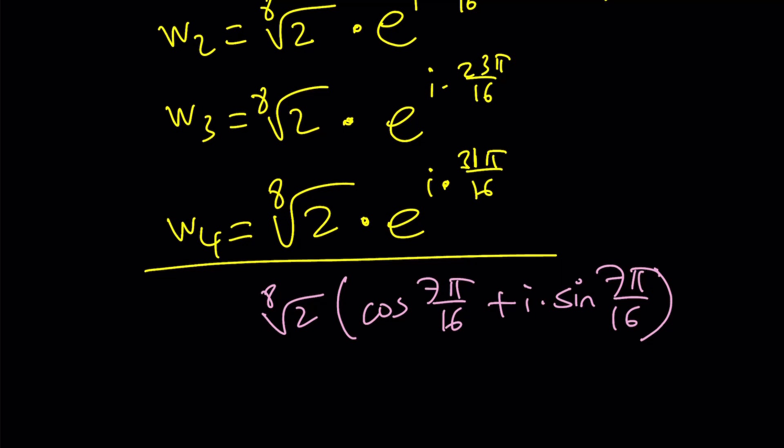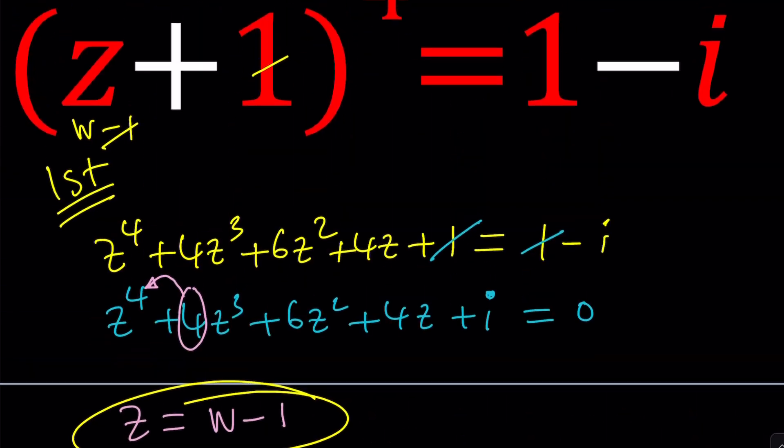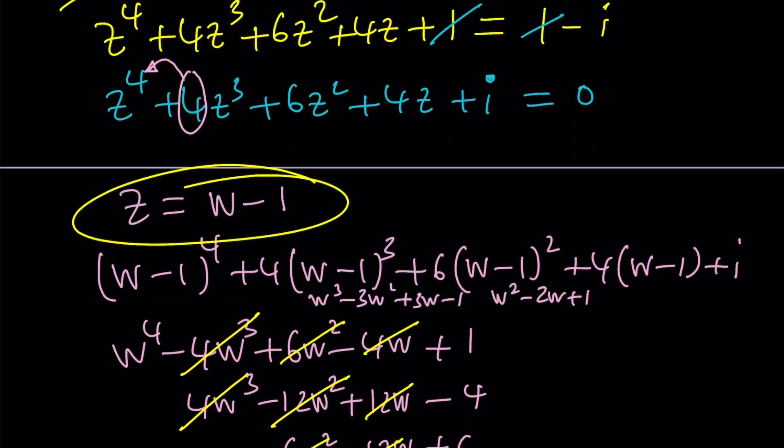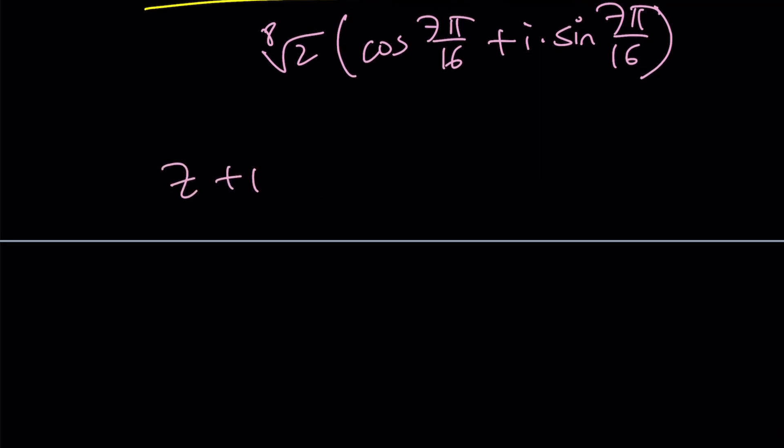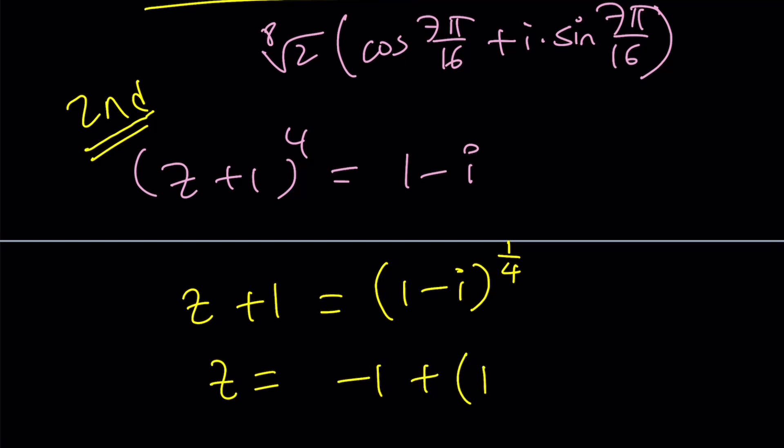And I told you that I was going to present two methods. Let me briefly talk about the second method. So the second method is kind of more direct because it doesn't require any substitutions. Well, sort of. You can directly take the fourth root. That would be my second method. And if you did, z plus 1 would be the fourth root of 1 minus i. But I could probably write it as 1 minus i to the power of 1/4, which represents all fourth roots. And then we're going to be adding negative 1. And basically, there's going to be four fourth roots. And each one is going to give us a different solution.